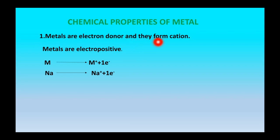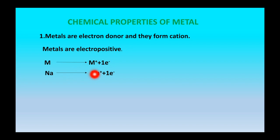Metals have one, two, or three electrons in their outer shell and these electrons are loosely held with the nucleus. As a result, it is easy for metals to lose electrons. When a metal loses electrons it acquires a positive charge, and therefore metals are called electropositive.